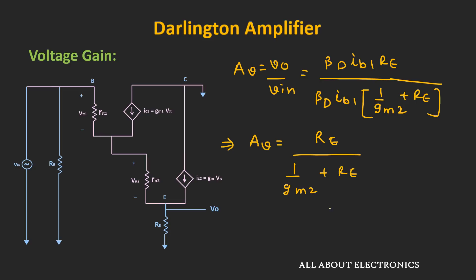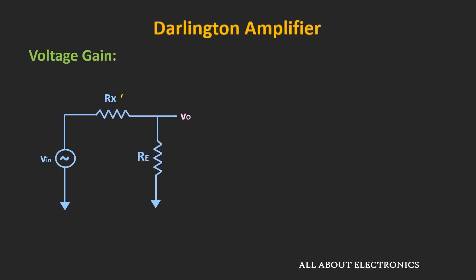Typically, 1/gm2 is much less than the emitter resistor Re, so the voltage gain of this amplifier is close to unity. This expression looks like a voltage divider: Vout/Vin equals Re divided by (1/gm2 + Re). Based on that, we can draw the equivalent circuit, where Rx is approximately equal to 1/gm2. This is the equivalent circuit of the amplifier seen from the output side.